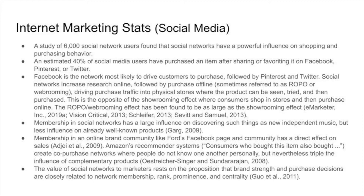A study of 6,000 social network users found that social networks have a powerful influence on their shopping and purchasing behavior. 40% of social media users have purchased an item after sharing or seeing it on Facebook, Pinterest, or Twitter. Facebook is a network that's mostly used to drive customers to purchase, followed by Pinterest and Twitter. Social networks increase research online, followed by purchases offline — people will go and do their research online and then go buy it in a store.